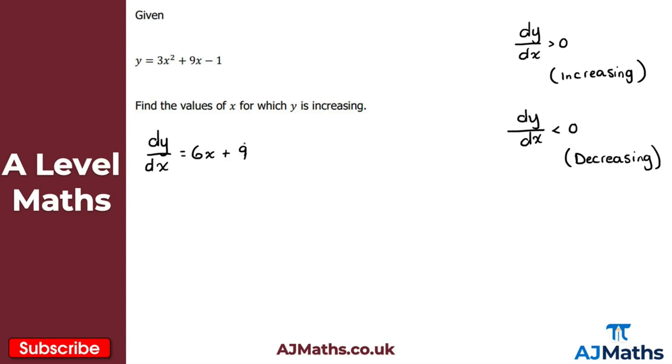And what we're saying then is, if this is increasing, y is increasing, then this here, this first derivative must be greater than zero. So 6x plus nine is greater than zero.